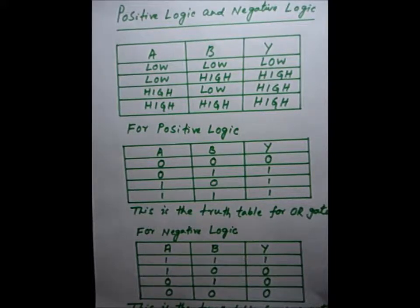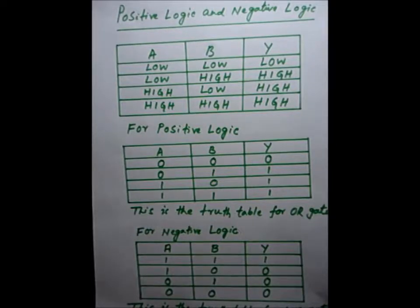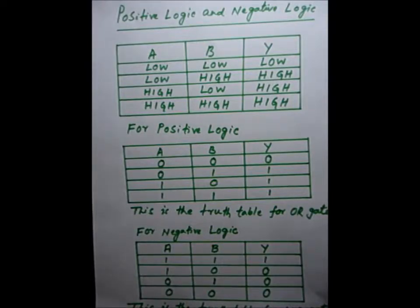We'll discuss positive logic and negative logic. If a binary 0 stands for a low voltage and binary 1 stands for high voltage, then this is called positive logic. On the other hand, if a binary 1 stands for a low voltage and binary 0 stands for high voltage, then this is called negative logic.